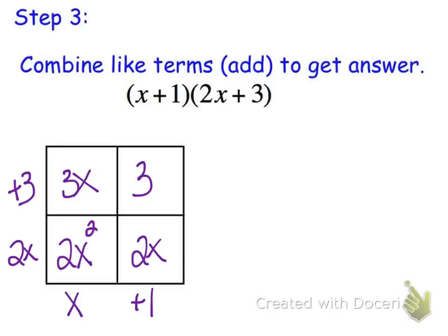Now if I look at the inside of the rectangle, I have 2x squared. And then I have some like terms here. Across this diagonal, I have 2x's and 3x's. They total up to be 5x's. And then I've got 3 ones.